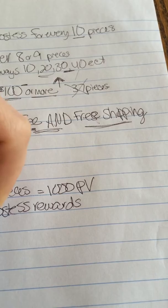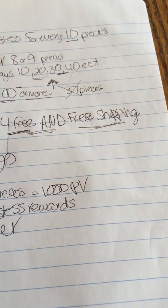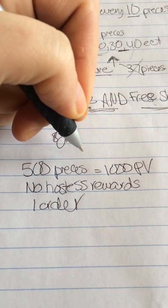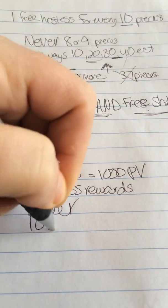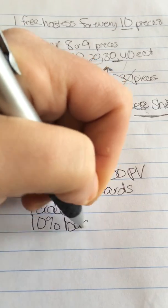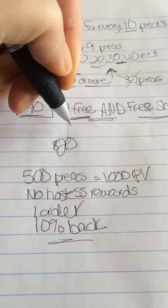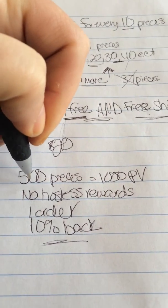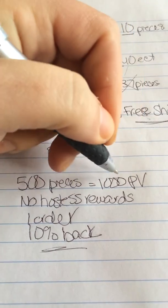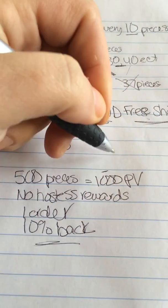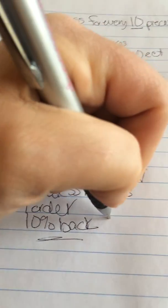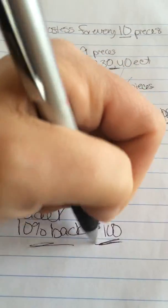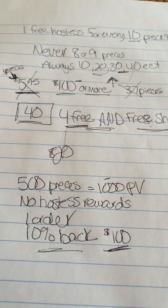And this has to be in one order, not multiple orders. Paparazzi is going to cut you a check, basically. It's going to come on your commission check and they're going to give you 10% back. So basically you're getting free money back for placing that large of an order. If you ordered exactly 500 pieces, a thousand PV, on your next commission check you're going to have a bonus of $100.